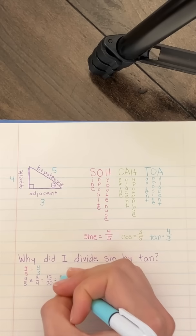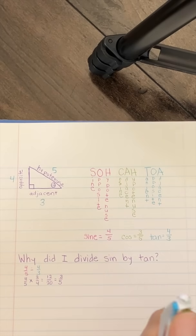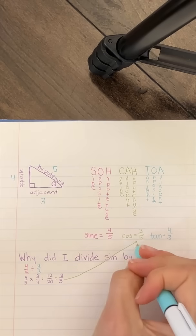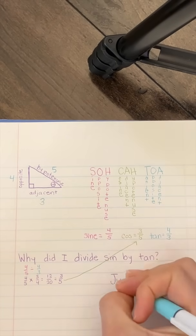This reduces to 3 over 5, which, guess what, is the same as cosine. Why did I divide sine by tan? Just cause.